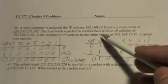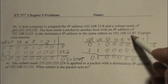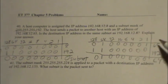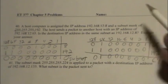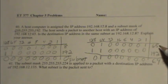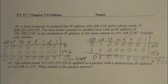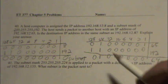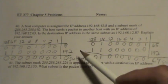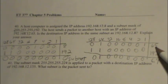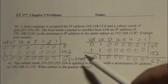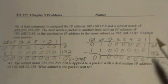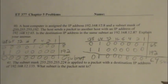So the answer is no — they are not in the same subnet. The first address is in the 0 subnet and the second is in the 64 subnet. In order for these two addresses to communicate with each other given this mask, they would need to go through a router.